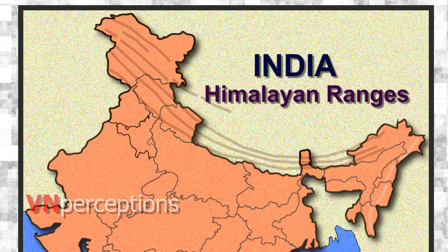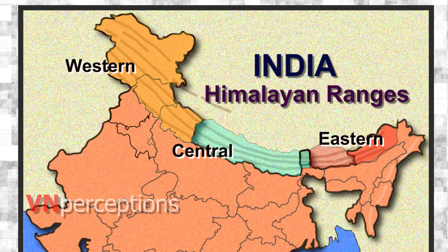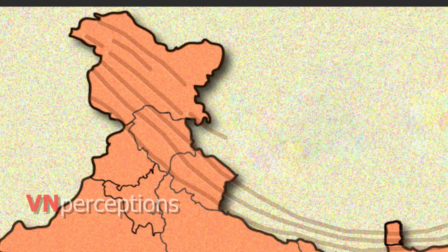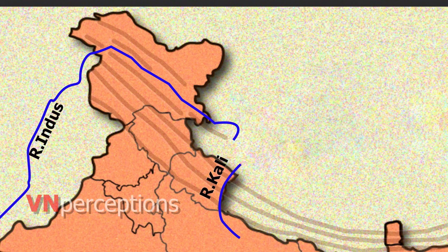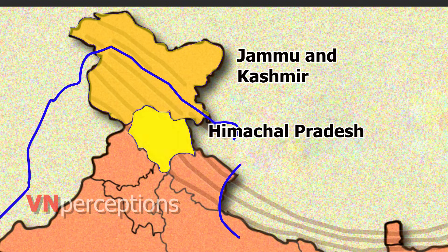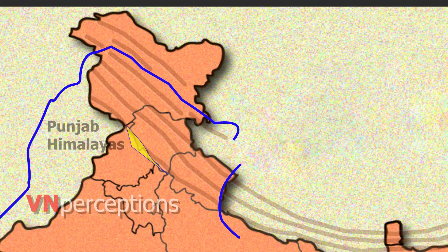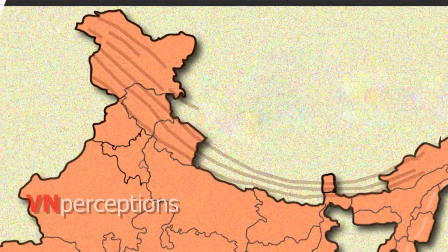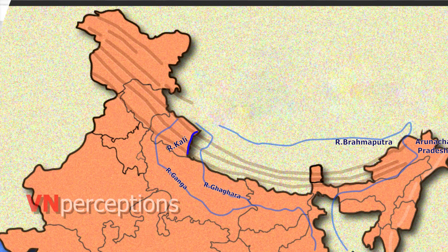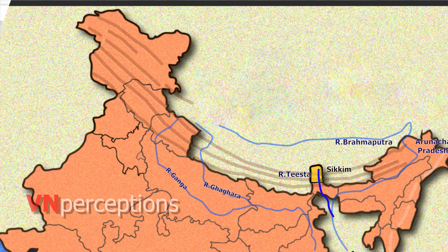From west to east, the Himalayas are divided broadly into three mountainous regions: western, central and eastern. The western Himalayas extend from the Indus river in the west to the Kali river along the Nepal border, covering Jammu and Kashmir, Himachal Pradesh and Uttarakhand. They can be further divided into Kashmir Himalayas, Himachal Himalayas, Punjab Himalayas and Kumaon Himalayas. The central Himalayas stretch between river Kali to river Tista, with the major part covered by Nepal. Its eastern part is called the Sikkim Himalayas and the Darjeeling Himalayas.